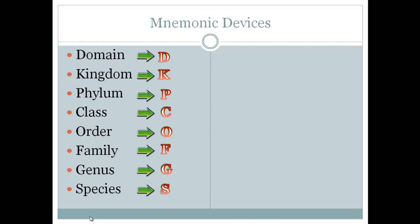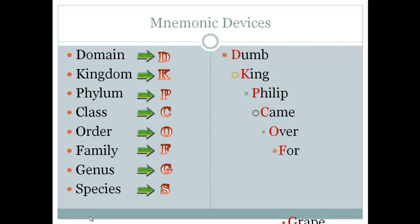What we came up with was: Dumb King Philip Game Over Bore Grape Soda. If this phrase helps you remember it, that's awesome, but if you need to create your own phrase, that's totally fine — it's whatever works for you. And you don't just have to use this for the classification system; you can use a mnemonic device for any other set of information we've gone over.